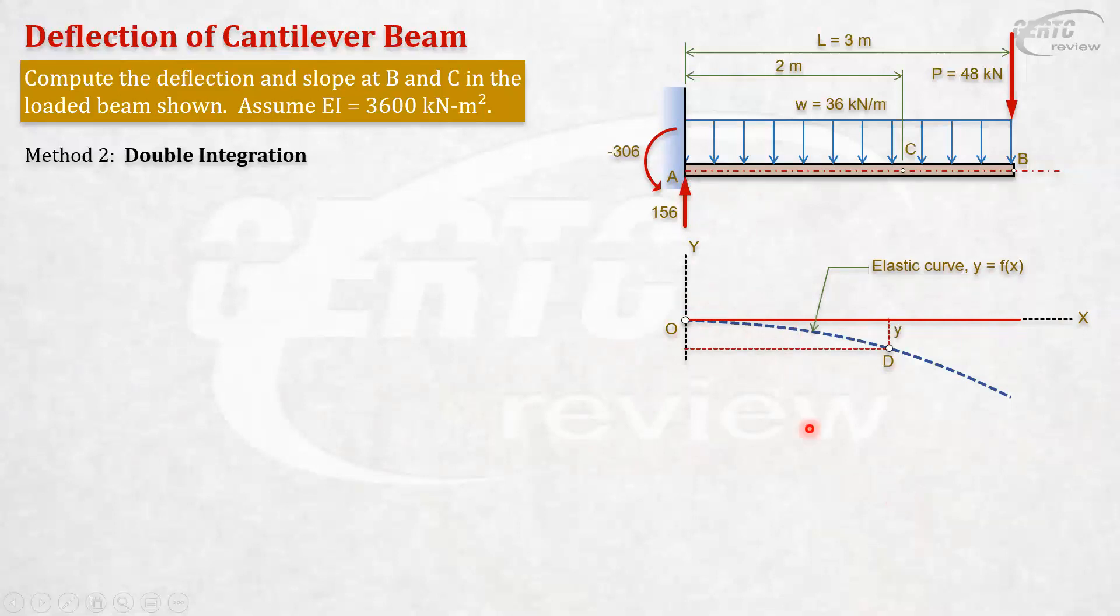We will get the equation of the elastic curve, y as a function of x. The principle is, at any point in the elastic curve d with coordinates x and y, EI times y double prime, the second derivative, equals the moment at the point. The moment at d, whether you look at the left side of d or the right side of d. Either way.